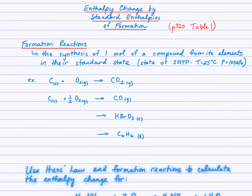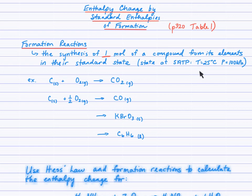It's very important that the products have a coefficient of one. The reactants have to be the elements that form that compound in their standard states, meaning their state at standard ambient temperature and pressure — 25 degrees Celsius, 100 kilopascals — so the states of the elements that you know at room temperature.